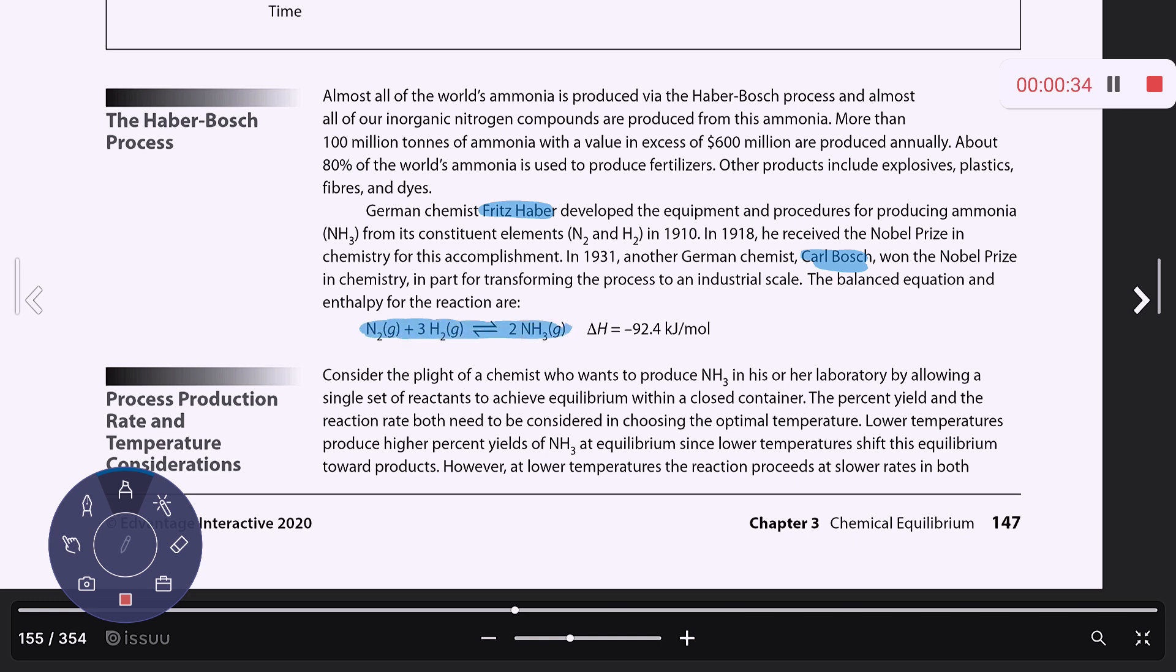Here's the reaction for producing ammonia. It's an exothermic reaction. A couple of things to note: we have four gaseous reactants and two gaseous products.